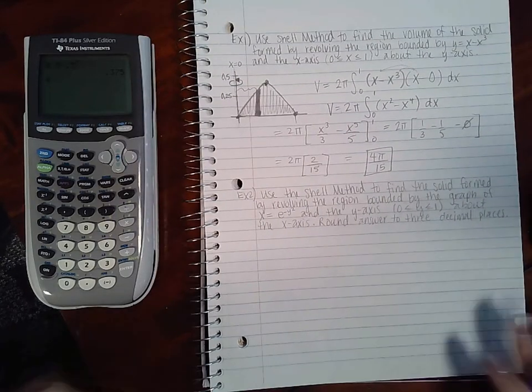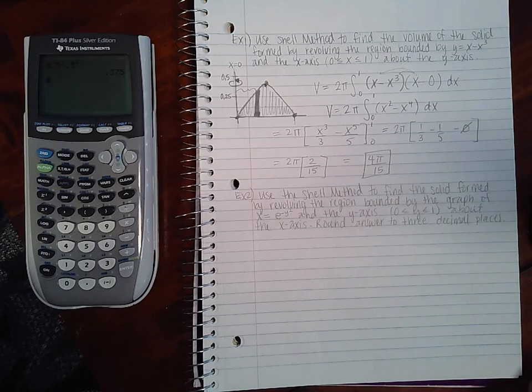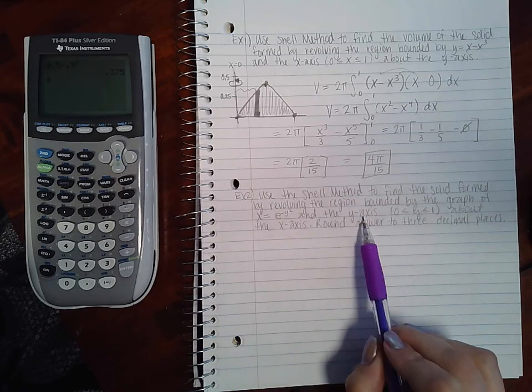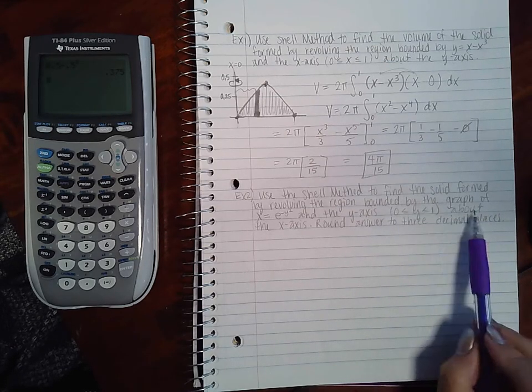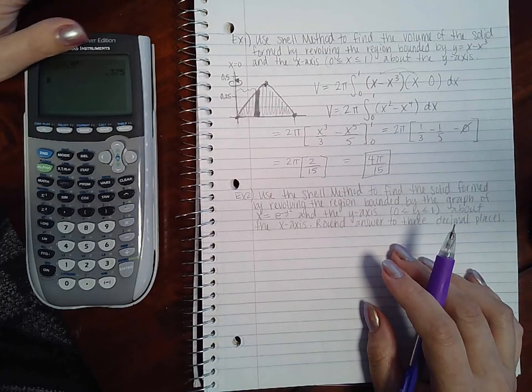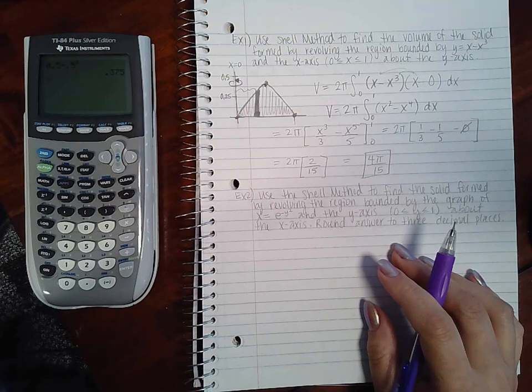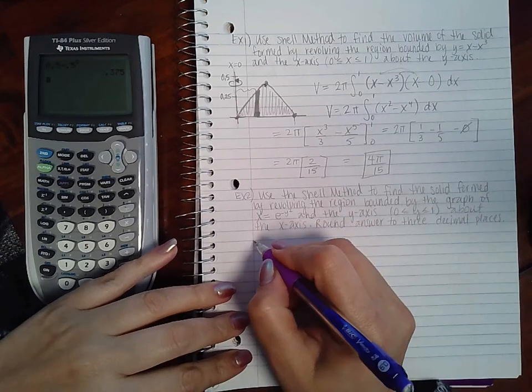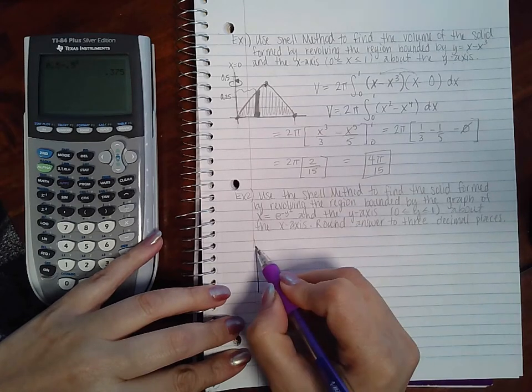Let's move on to example 2. Example 2 says use the shell method to find the solid formed by revolving the region bounded by the graph of x equals e to the negative y² and the y-axis, where y is between 0 and 1, about the x-axis. Now this one's going to be a little bit harder for me to graph. I think they give you the graph on this one actually.